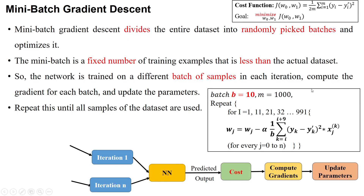Mini-batch gradient descent divides the entire dataset into a number of small batches randomly, then applies the optimization. The mini-batch is a fixed number of training samples. The size of this mini-batch should be less than the actual dataset. For example, if you have a dataset with 1000 samples, we divide into mini-batches smaller than 1000 — we should not take all 1000 into a single batch, because then it becomes a normal gradient descent algorithm.